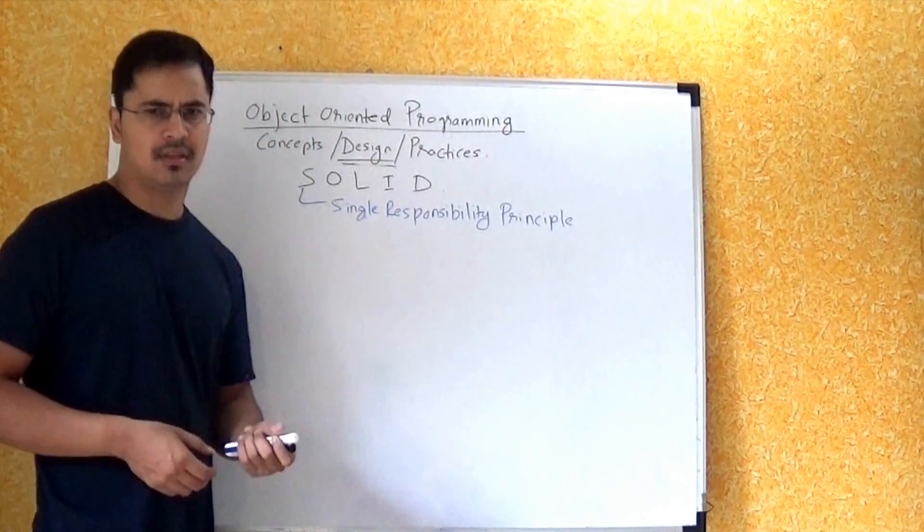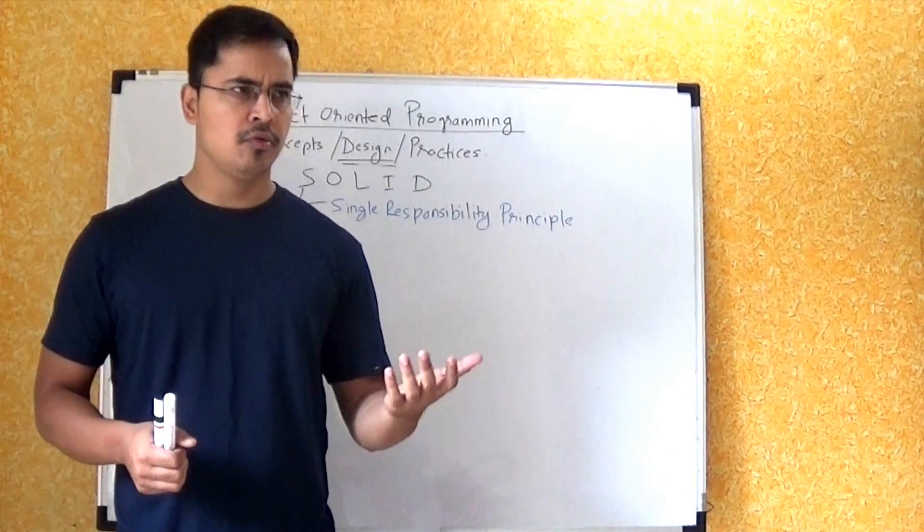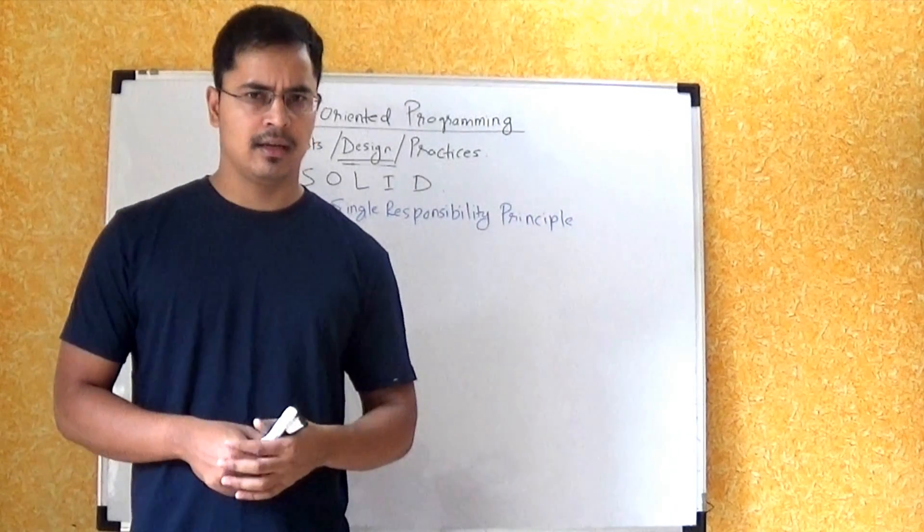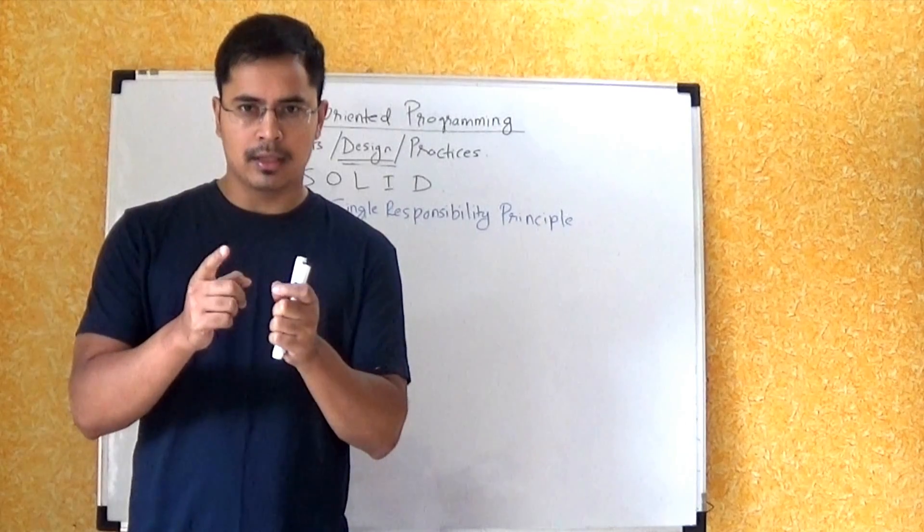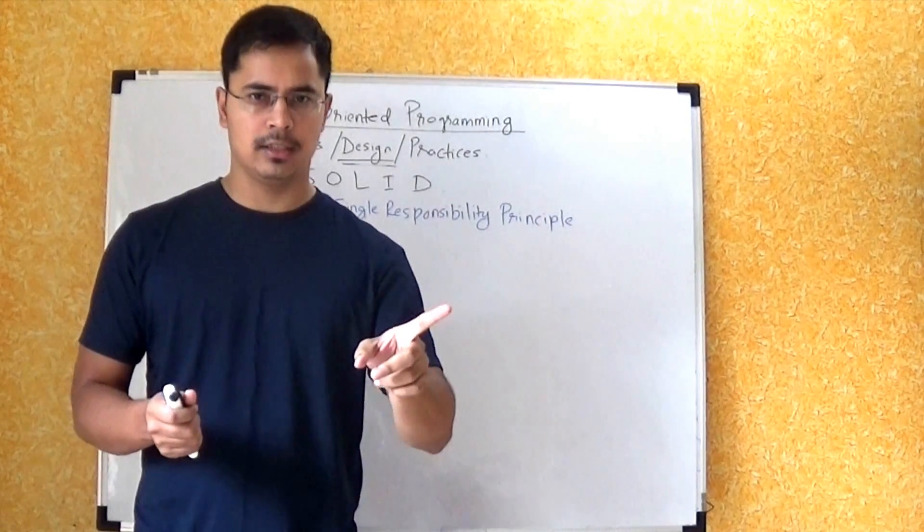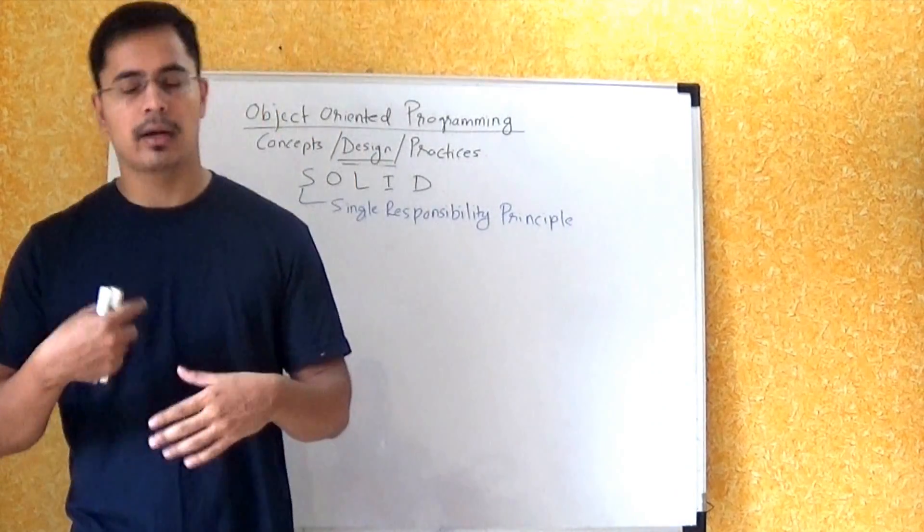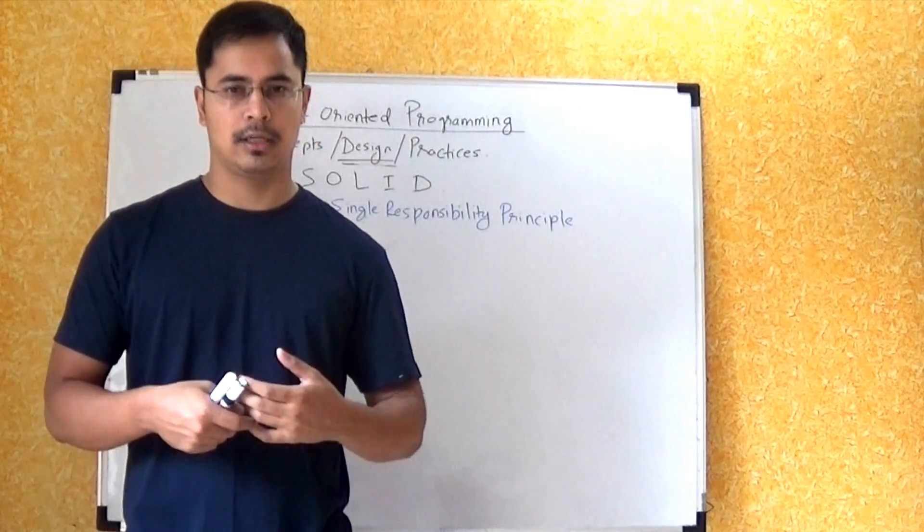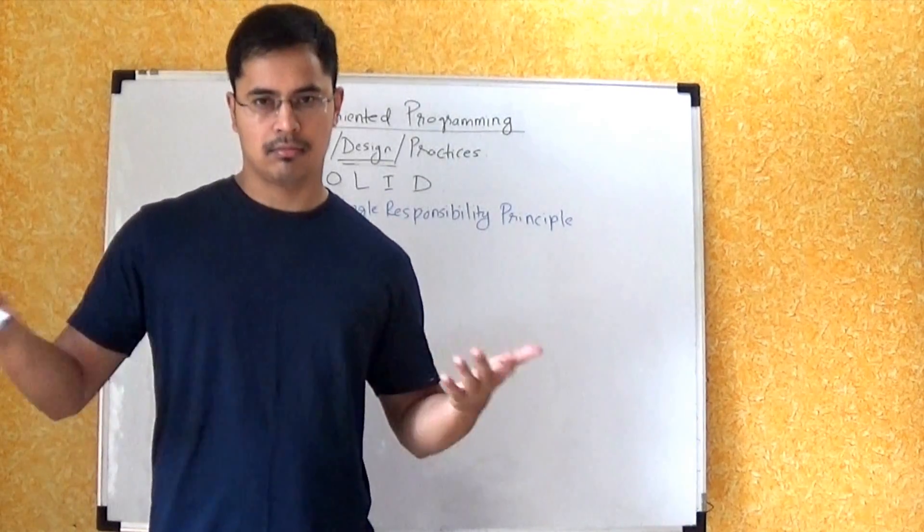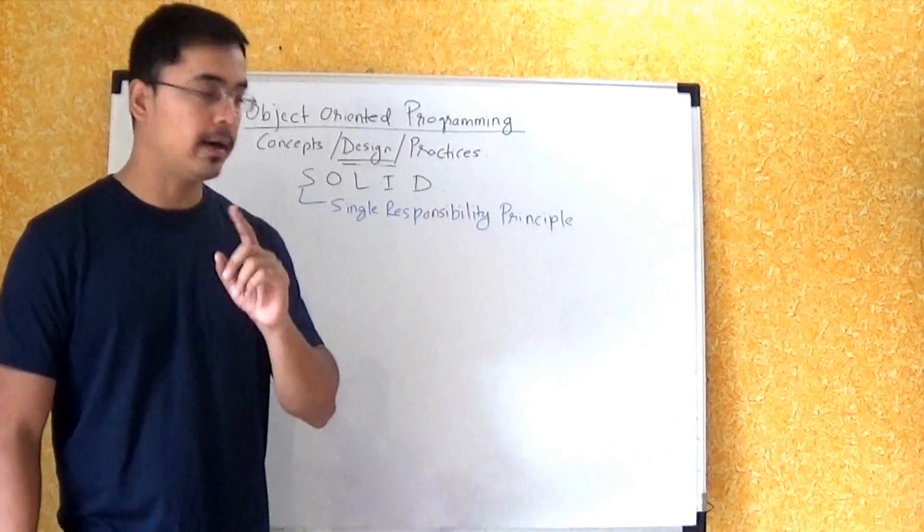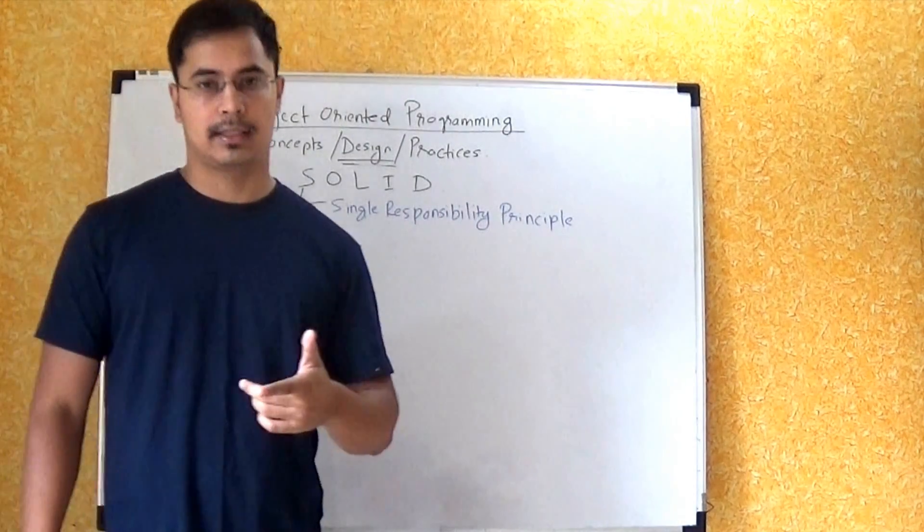So how do you infer that? Is it like a class should have only one reason or only one time it should change? No, it can have multiple reasons to change. It could be changed multiple times across time, but we are talking about context.